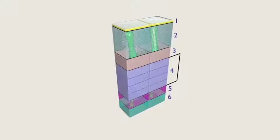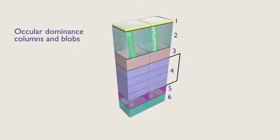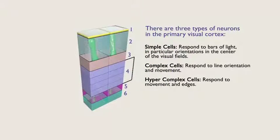Perpendicular modules consist of cells organized in functional units known as ocular dominance columns and blobs, which are involved in color processing. There are three types of neurons in the primary visual cortex—simple cells, complex cells, and hypercomplex cells.